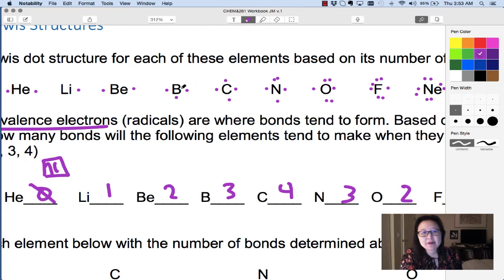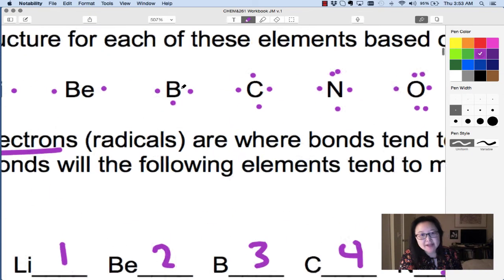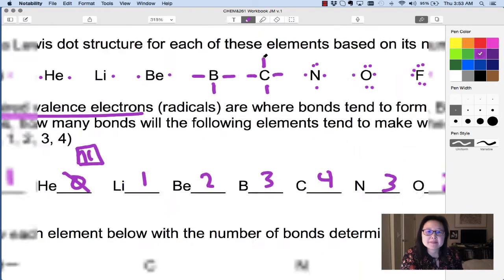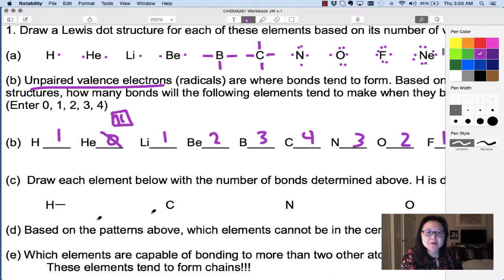Based on the number of unpaired electrons, you can predict how many bonds will be formed. For example, boron has 3 unpaired electrons, so it tends to make 3 bonds. Carbon tends to make 4 bonds. So go through all the elements in this row and show how many bonds you would expect. For hydrogen, it's just 1 bond.